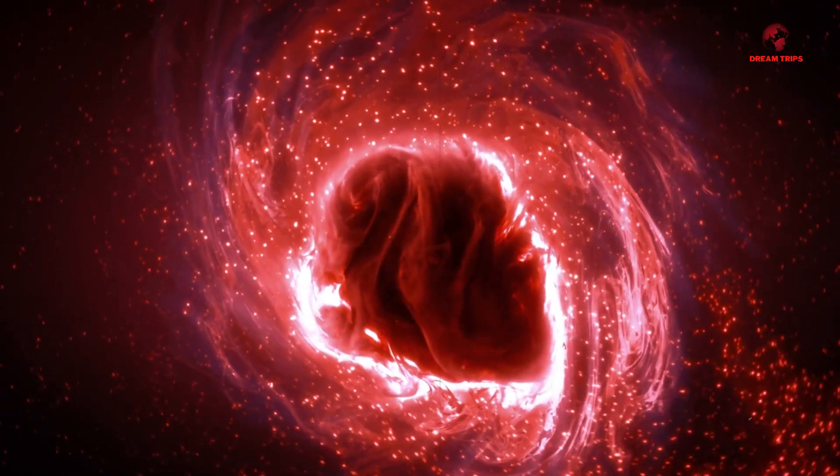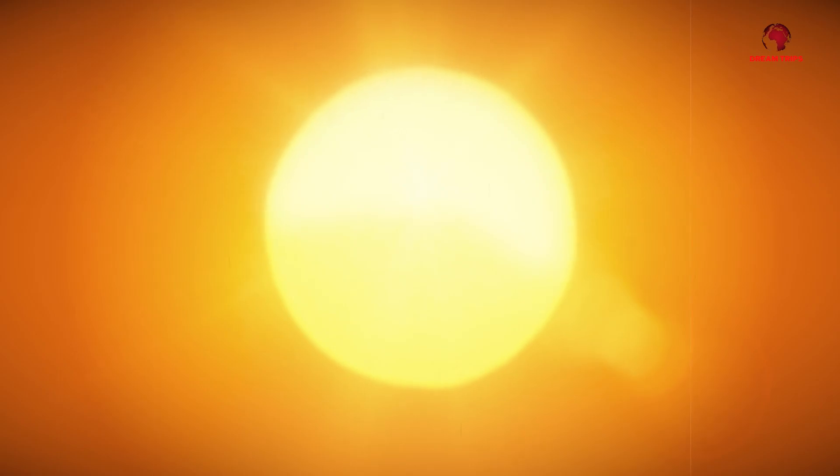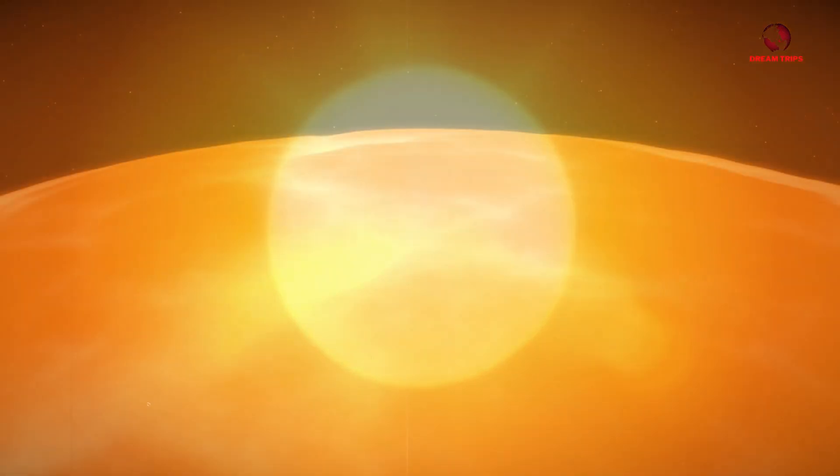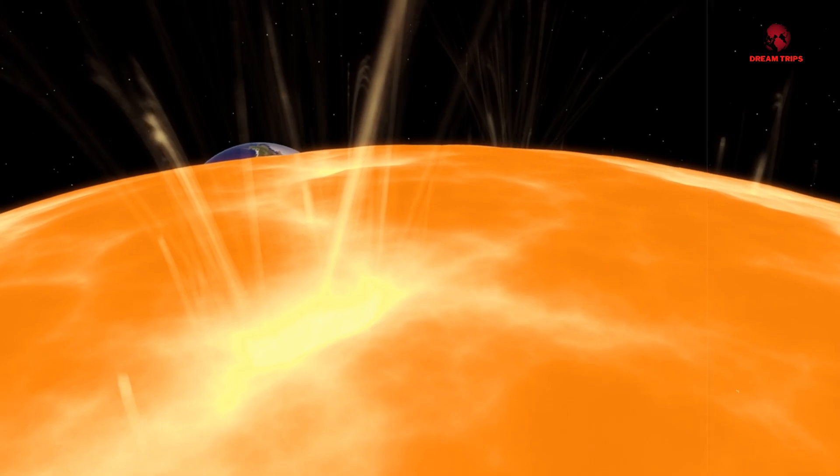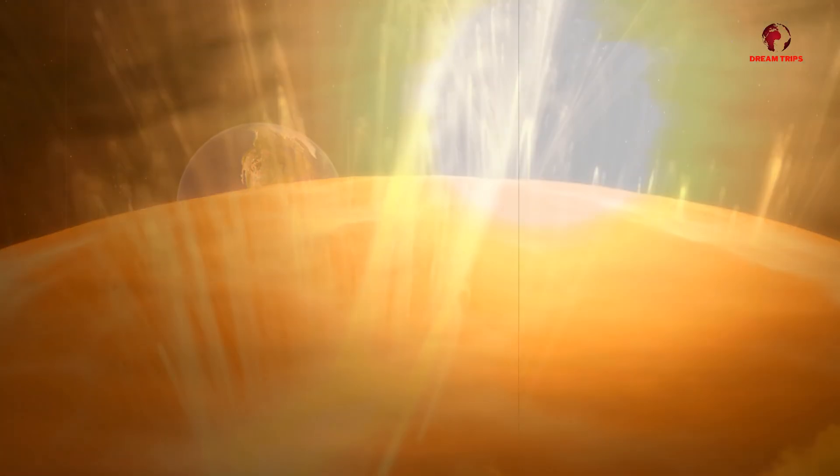Solar flares are sudden, intense bursts of radiation emanating from the sun. They occur when magnetic energy that has built up in the solar atmosphere is suddenly released. These flares can emit energy across the entire electromagnetic spectrum, from radio waves to X-rays and gamma rays.